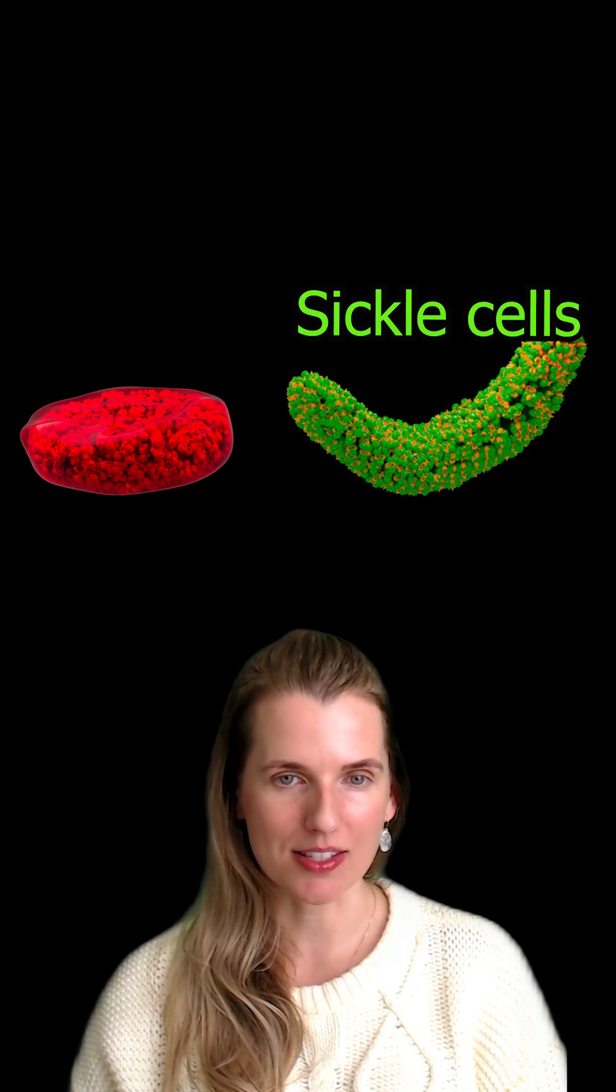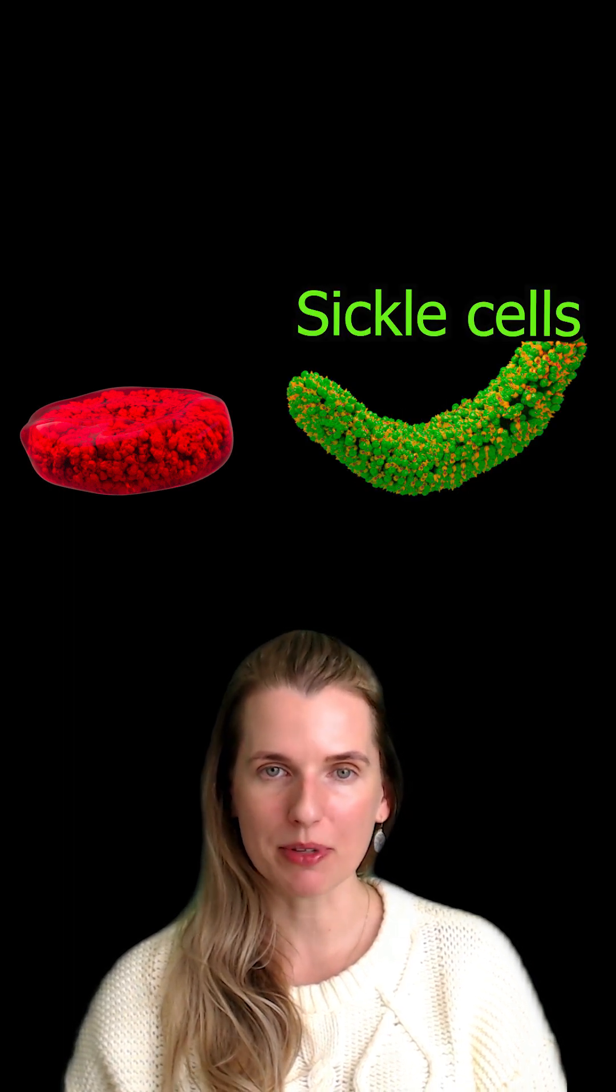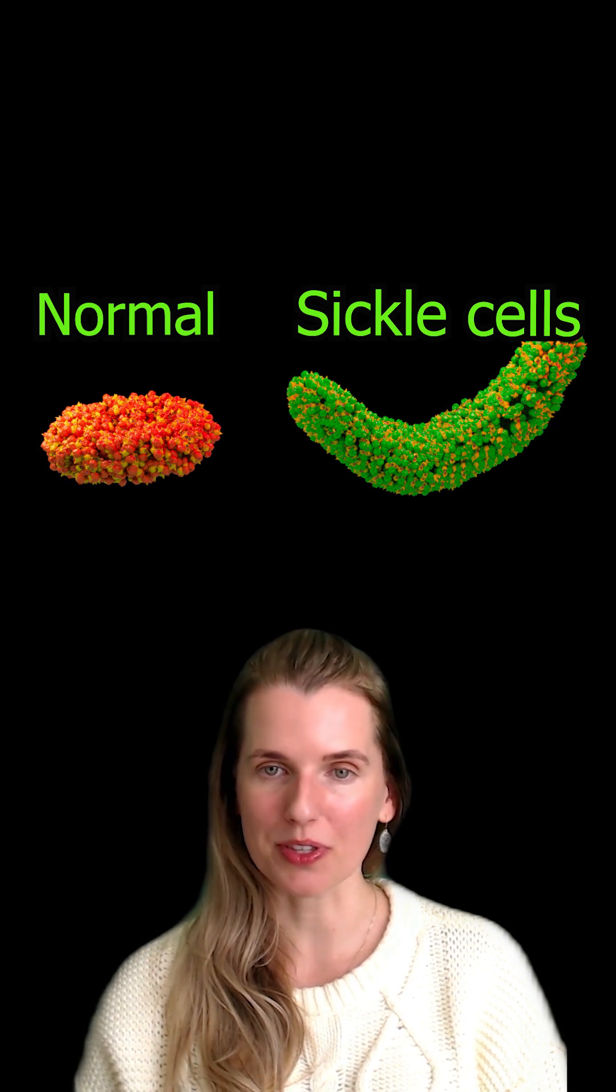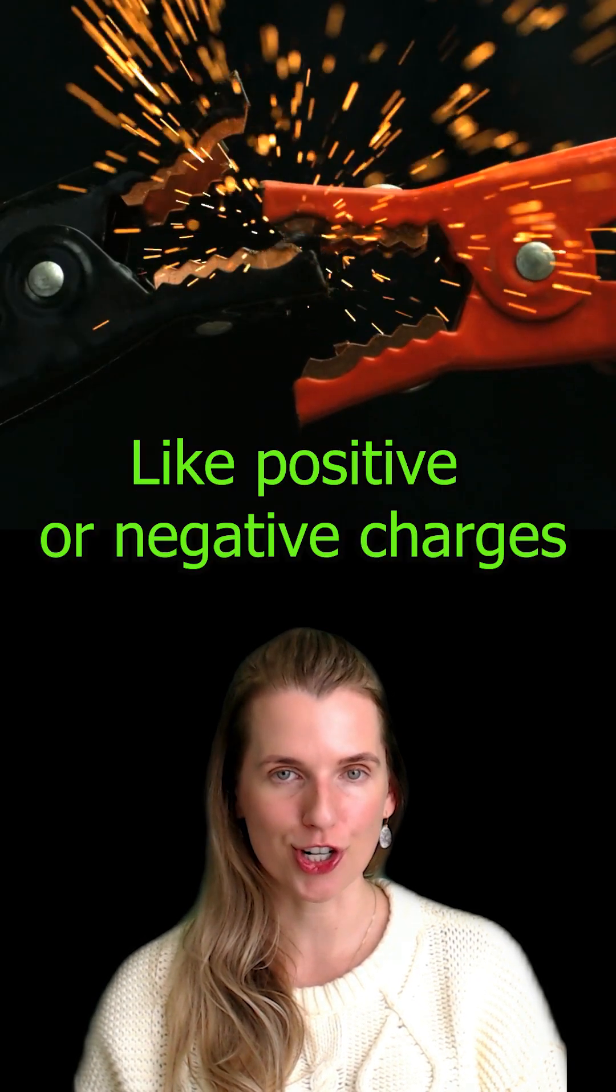For the next four years, Dr. Pauling researched his dinnertime theory. He wanted to prove that the hemoglobin inside sickle cells was somehow different from the hemoglobin inside normal cells. He had a hunch that the hemoglobin were the same size but had different charges.